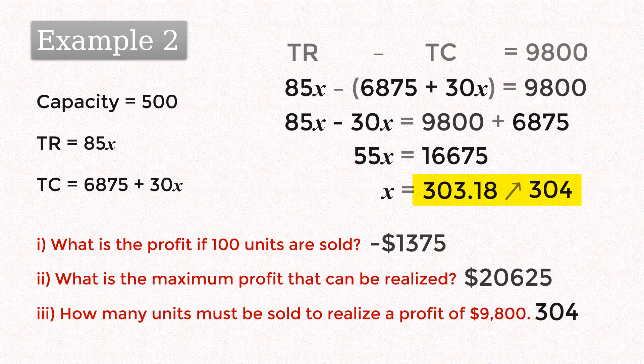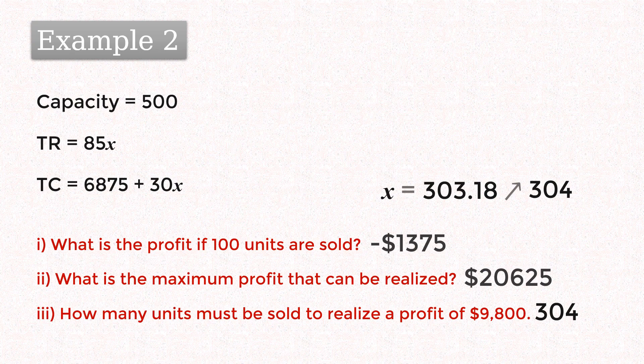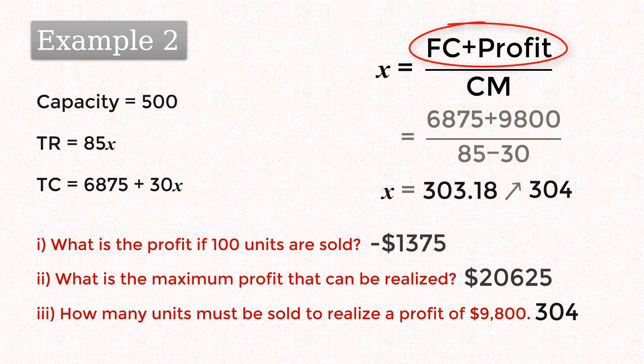We can't sell fractions of a unit, and we have to round up to the next integer because selling 303 units will generate slightly less than the required profit. Note that we can also calculate the number of units directly by dividing fixed cost plus profit by the unit's contribution margin.